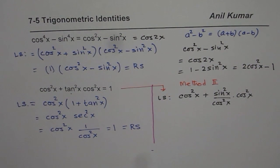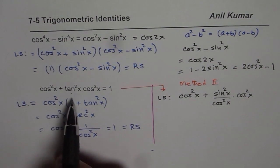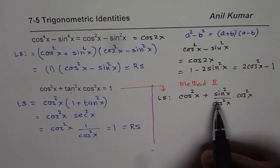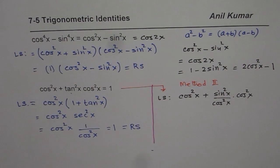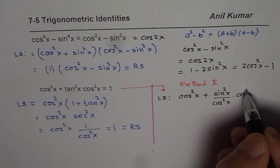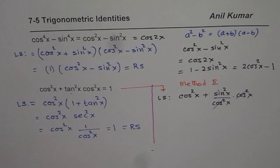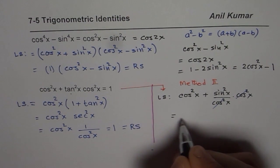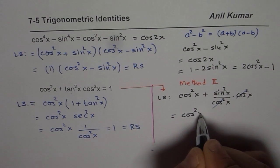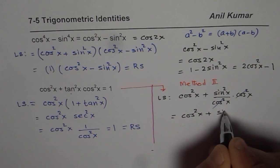And this is also a good strategy. Factoring is one strategy. The other one is break tan as sine over cos. Clearly from here you can see that cos square x can be cancelled.